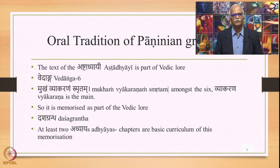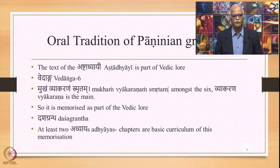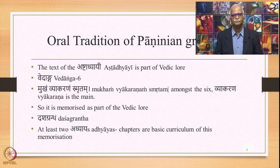The text of the Ashtadhyayi was part of the Vedic lore that needs to be memorized, and was handed down from one generation to the next for a period of more than 2500 years in continuum. Panini's Grammar, the text of Ashtadhyayi, is considered as one of the six Vedangas — the limbs of Veda. Vyakarana, referring to the Paninian Vyakarana, is stated to be the mane of the six Vedangas.